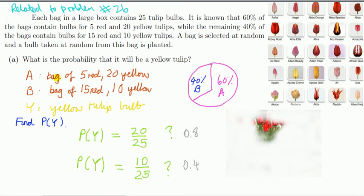Suppose we didn't know about the law of total probability—what might we think? Well, the probability of an event is number of ways that event can happen divided by total number of possible outcomes. So could this be an answer? 20 over 25, because in bag A I've got 25 bulbs and 20 are yellow. Or for bag B, 10 out of 25. Well, something's wrong because it can't be both, right? The answer can't be both.